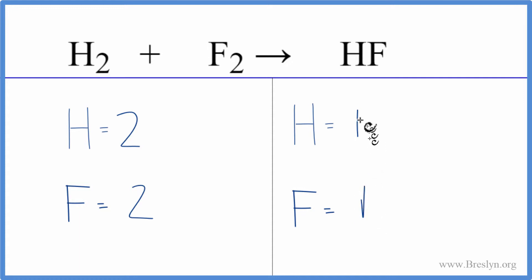So really what we need to do is double our hydrogens and double our fluorines. And to do that we change the coefficient. That's the number in front of the HF. So we'll put a 2 right here.